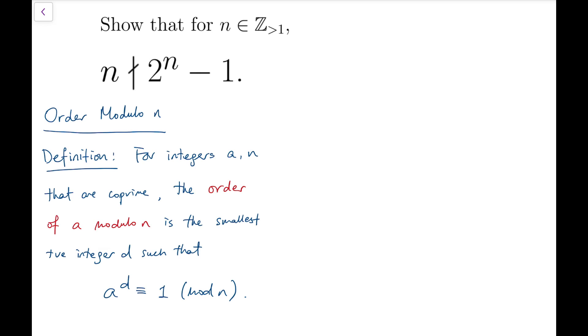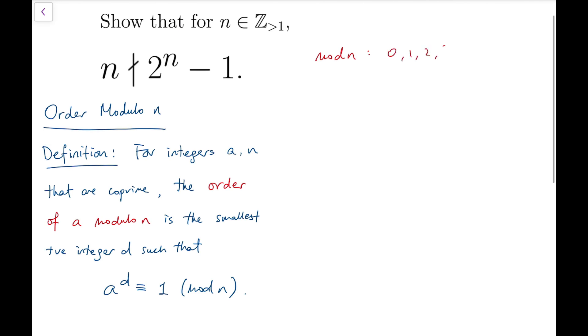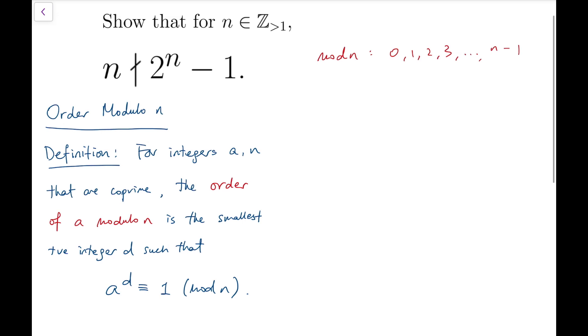Let me first explain why this number d must exist. So under operation mod n, the possible outcomes are only 0, 1, 2, 3, all the way up to n minus 1. And as we keep multiplying by a, the index goes up. So a, a squared, a cubed, to infinity.